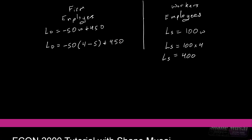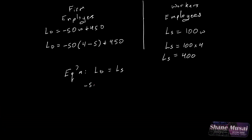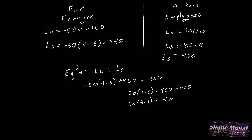We set labor demand equal to labor supply to calculate S in equilibrium: negative 50 times (4 minus S) plus 450 equals 400. Solving this gives 4 minus 1 equals S, therefore S equals $3. So the subsidy being paid by the government must be $3 for each worker hired. Substituting $3 into the demand equation confirms labor demanded also equals 400, giving us equilibrium in the market.